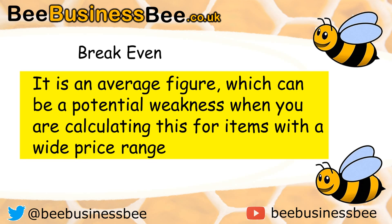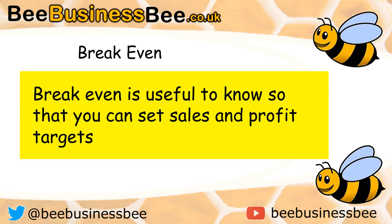Break-even gives you an average figure. This is potentially one of its weaknesses, as you're calculating this per item and the amounts may have a wide price range. In a shop, the break-even point would apply to every item you sell — tea bags, coffee, milk, sugar — you'd have to work out every single item. In a car dealership, selling one expensive car may skew those figures if your break-even point is based on an average.